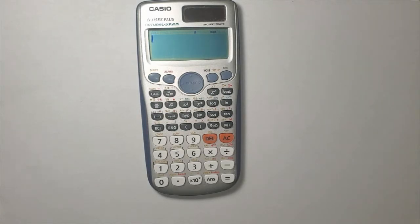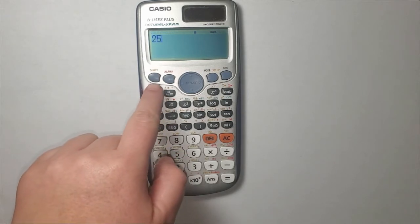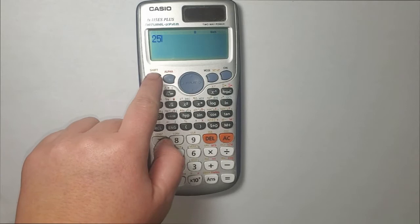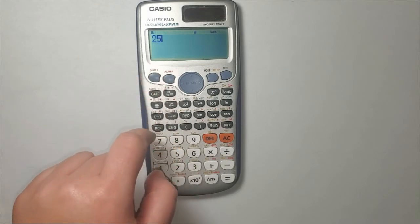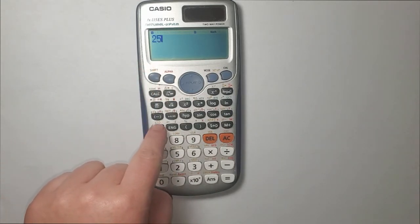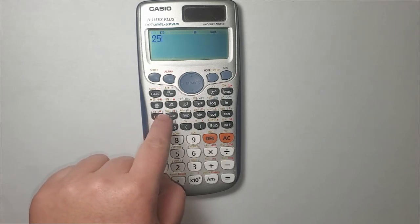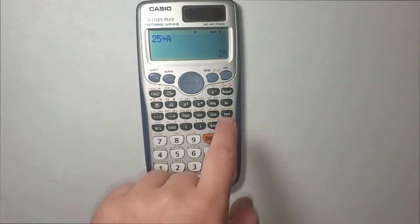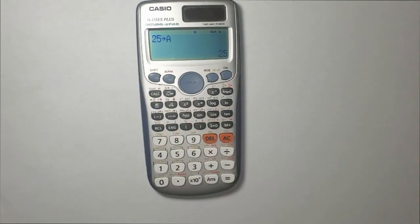In order to store a number, we type the number first in our calculator. Let's say I want to store 25. So I type it in and next I will press this shift key here. This yellow key is used to access the yellow options above each key. Now with shift pressed, I will press this RCL button to access the store feature, and next this minus to access the A variable. And here it is, 25 assigned to variable A.